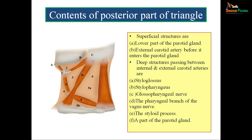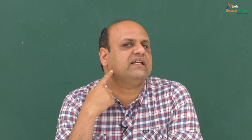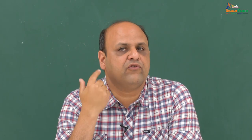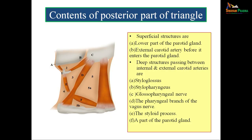In the posterior part of the digastric triangle, the superficial structures include the lower part of the parotid gland and the external carotid artery before it enters the gland. There are also deep structures passing between the internal and external carotid arteries: styloglossus, stylopharyngeus, glossopharyngeal nerve, pharyngeal branch of the vagus nerve, the styloid process, and a part of the parotid gland.